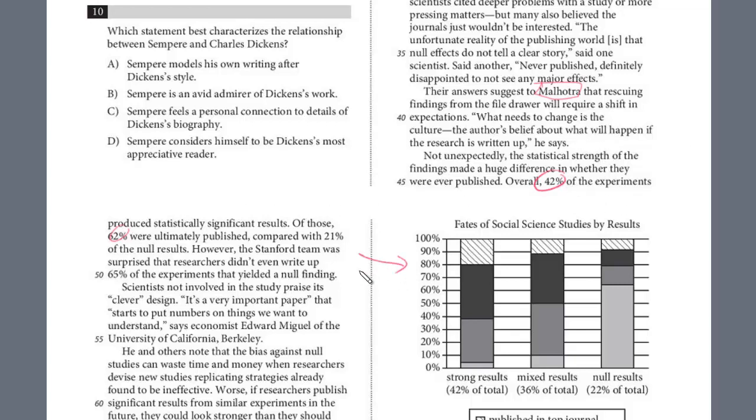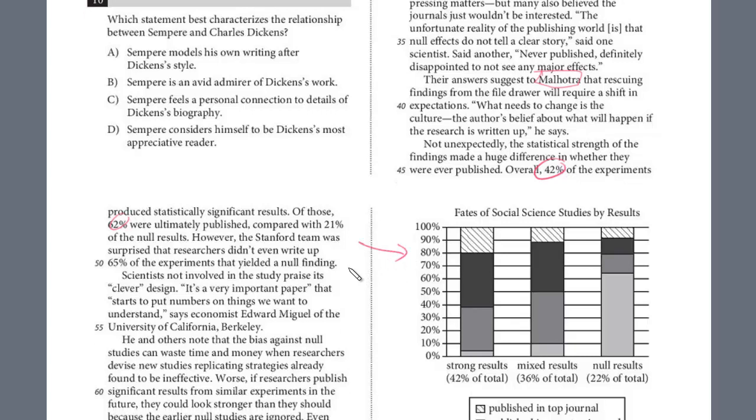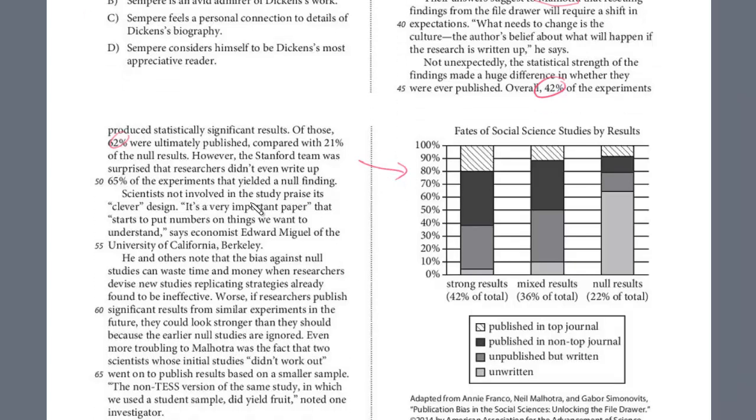Scientists not involved in the study, praise its clever design. We've got a professor at Berkeley. He and others know there's bias. Worse, if researchers publish significant results from similar experiments, they could look stronger than they should because earlier results are ignored. This was the segment from the very last question before in the previous video, the two-part question. But look here, even more troubling to Malhotra.